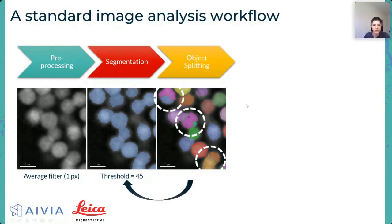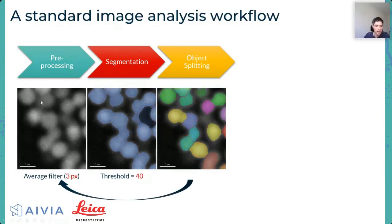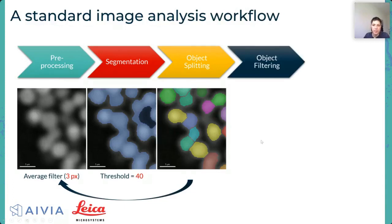You would consider changing the threshold and coming back, and that's where it gets interesting — coming back is sometimes very difficult in software because it's not intuitive and you have to start things again. You might even realize changing the threshold isn't enough and you need to go back to the pre-processing steps. For example, let's change the filter to something a bit larger to get smoother shapes in 3D, which also looks better in 2D, and you can end up with object splitting that looks good in 2D view.